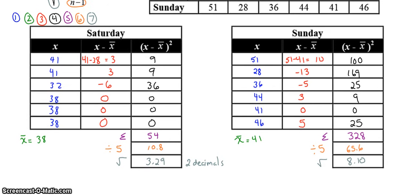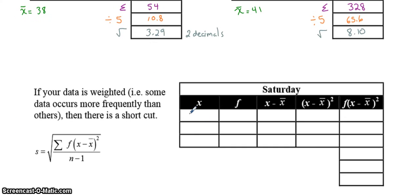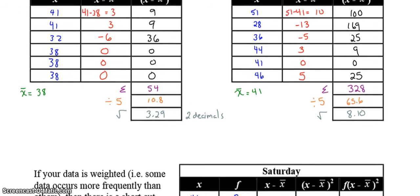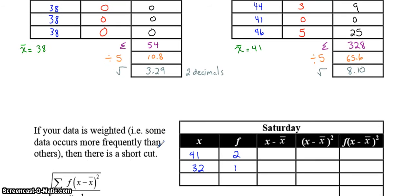So we're going to redo the work for Saturday and show you how that works. Since there are two 41s, all we have to do is write the 41 once under the x value and say under the frequency column that there are two of them. Then there is 132, and there's one of them. And there are three 38s.